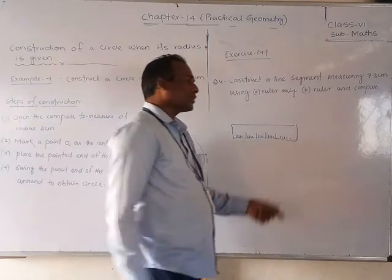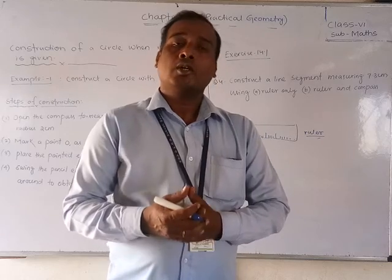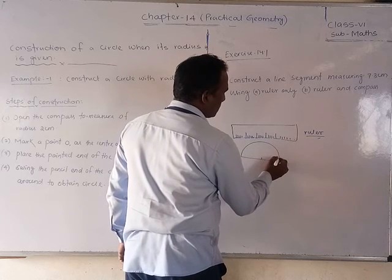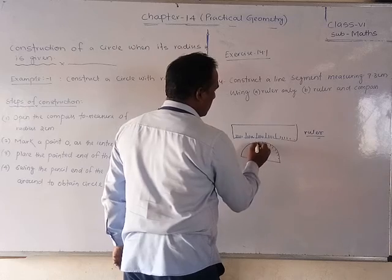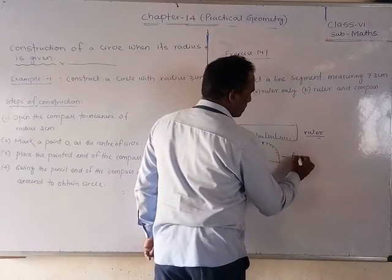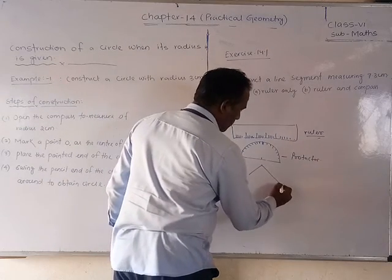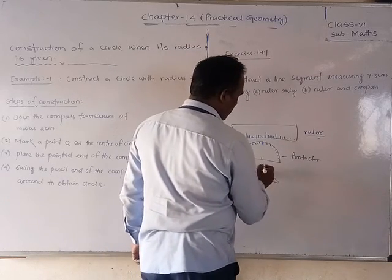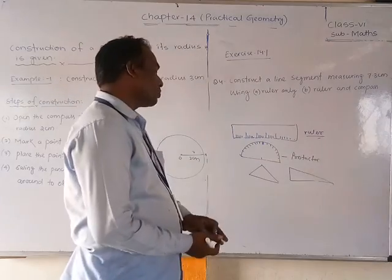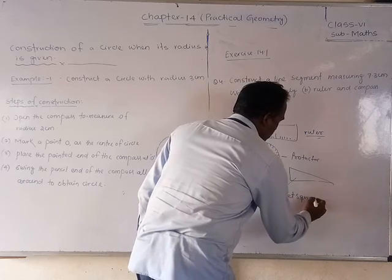Next, you should find the protractor — that semicircular instrument is called a protractor. Also, there are two set squares in the box: one is a 60-30-90 degree triangle and another is a 90 degree triangle. Both of these are called set squares.